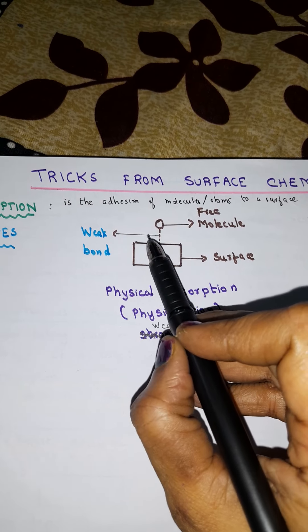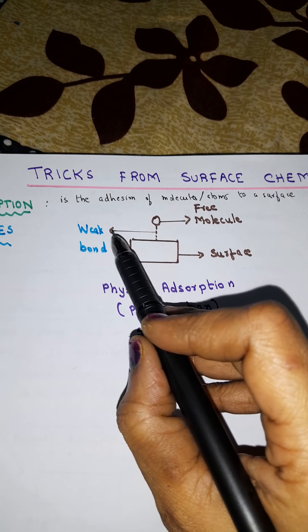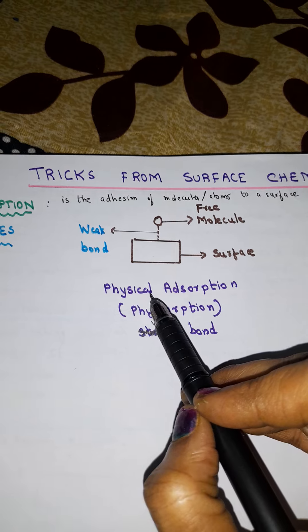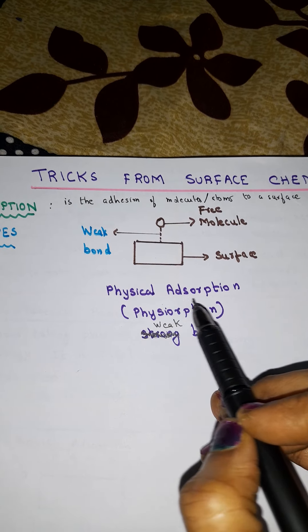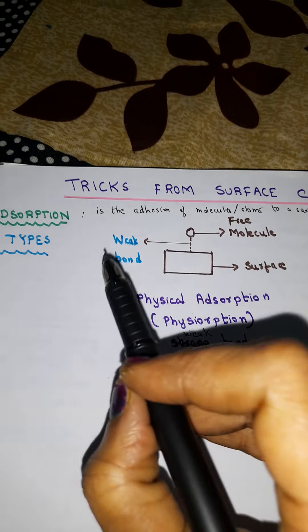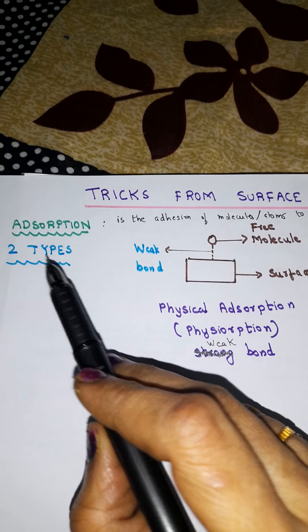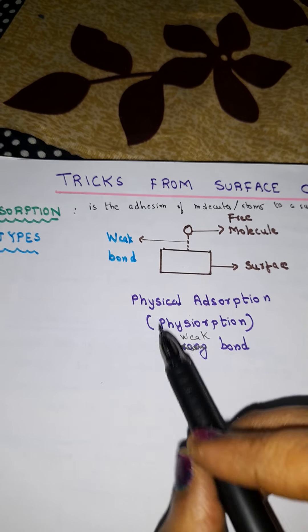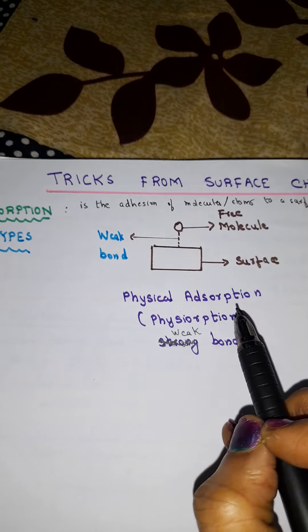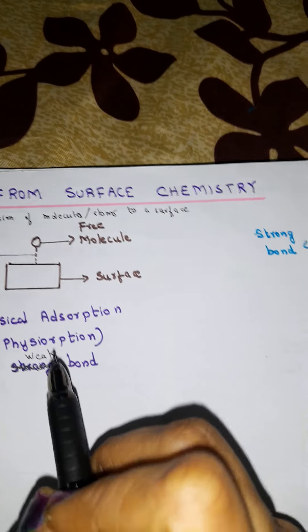So if the bond between the free molecule and the surface is very weak, then what do we call that? It is called physical adsorption or physisorption. So actually adsorption is of two types. When the bond is weak, we call it physical adsorption or physisorption.